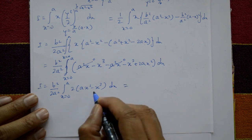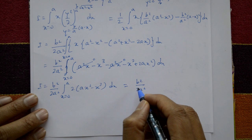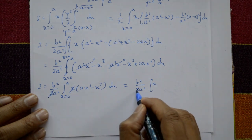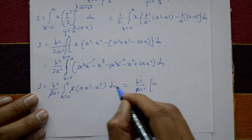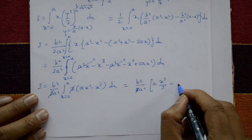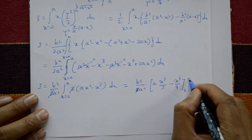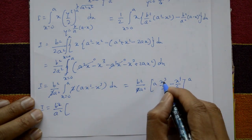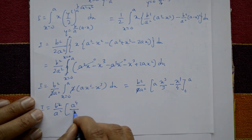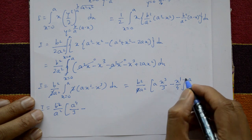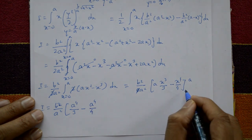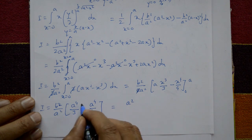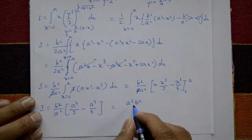Integrating with respect to x: b²/a² · [a·x³/3 − x⁴/4] from 0 to a. Applying the limits: b²/a² · [a·a³/3 − a⁴/4] = b²/a² · a⁴[1/3 − 1/4] = b²/a² · a⁴ · (1/12) = a²b²/12.